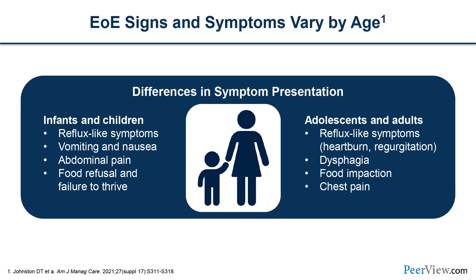EOE signs and symptoms vary by age. In infants and children, they often present with reflux-like symptoms, nausea and vomiting, abdominal pain, food refusal, and failure to thrive. Whereas in adolescents and adults, they tend to present more often with reflux-like symptoms, heartburn and regurgitation, dysphagia, difficulty swallowing, food impaction with food stuck in their throat, or chest pain.